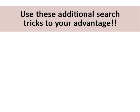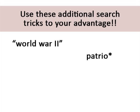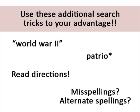Use these additional search tricks to your advantage. Putting your search terms in quotes will search for them only as a phrase. Adding an asterisk to the end of a root word will locate all words for which that is the root. Reading the database directions or the help page is useful for specific instructions on how to search that database. And making sure you are spelling things correctly, or checking if there are variant spellings, sometimes does the trick — every once in a while, it's the little things.